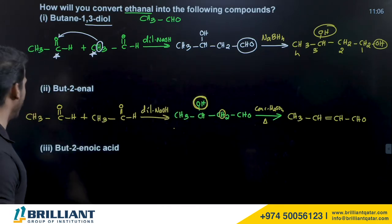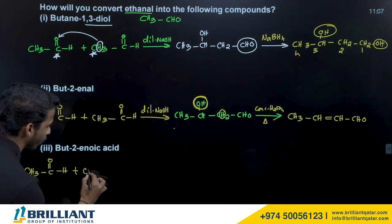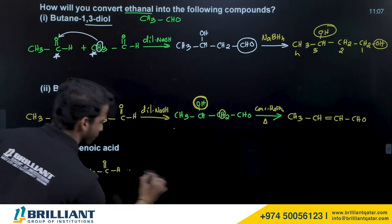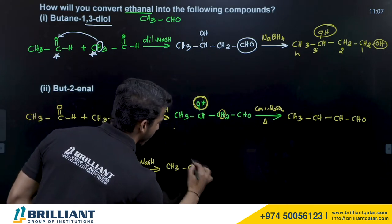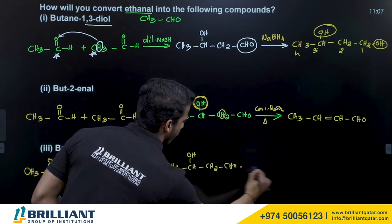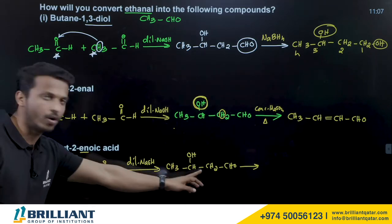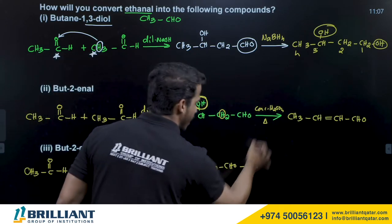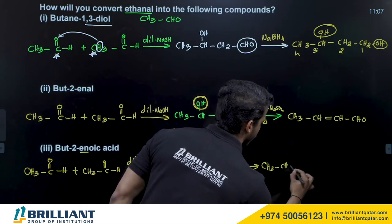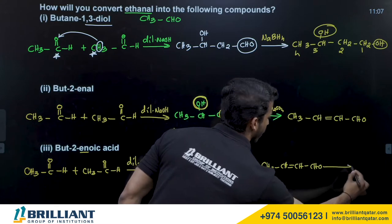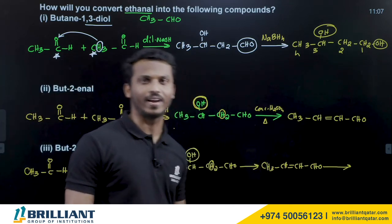Next: convert ethanol to but-2-enoic acid. Again, 4 carbons are needed from ethanol, so the first step is aldol condensation with dilute NaOH, giving CH3CHOH–CH2–CHO. Then dehydration is performed — eliminate OH and H to make a double bond, giving the same but-2-en-1-al intermediate.